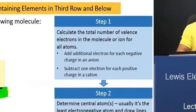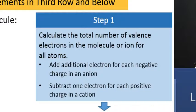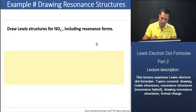Now again, in step one, we're going to need to, if we recall it in step one, we're going to need to calculate the total number of valence electrons in the molecule or ion for all atoms, and we're going to add additional electrons for each negative charge in an anion. So if we come back here, we're going to need to add an electron for that anion, so that'll be one.